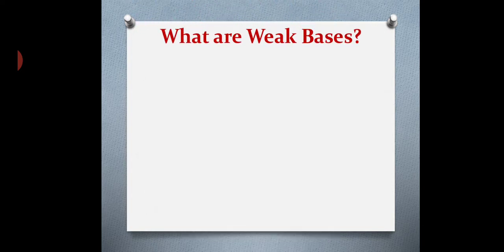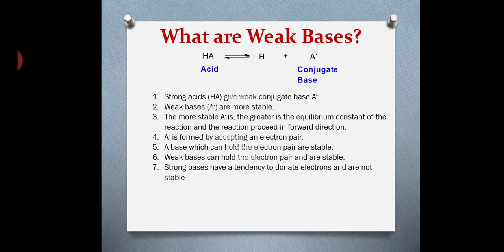To understand weak bases, let's look at the general equation for an acid. An acid HA dissociates to give H⁺ and a conjugate base A⁻. Strong acids give weak conjugate bases, and weak acids give strong conjugate bases. Weak bases are stable, so the equilibrium constant of the reaction is high and the reaction proceeds in the forward direction.